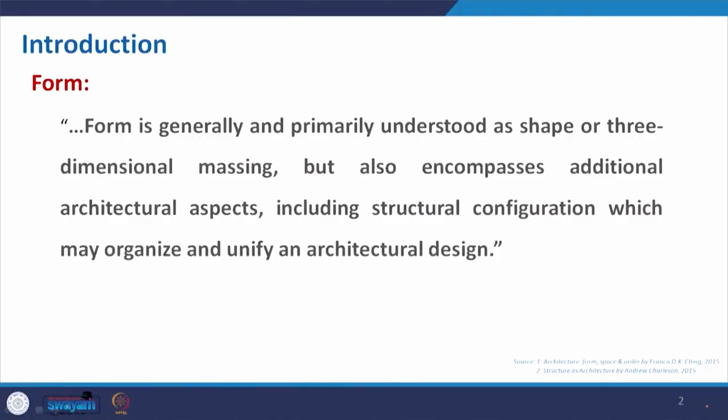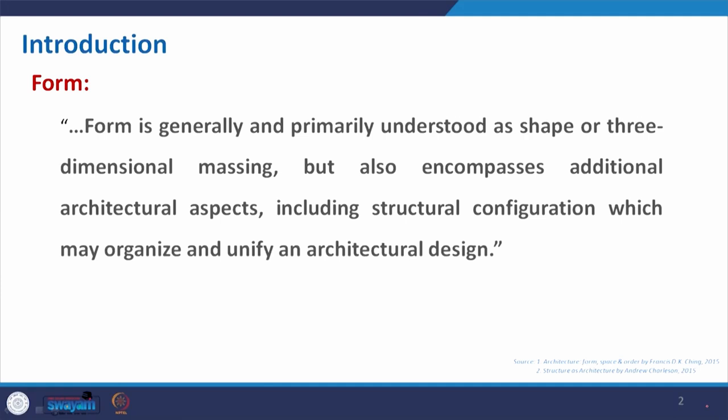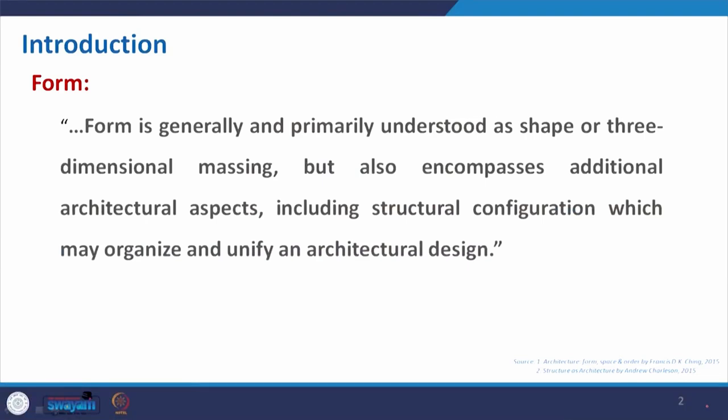Here, as in previous lectures, we look at the definition. Form is generally and primarily understood as shape or three-dimensional massing. One object having three dimensions gives a sensation to our eyes and we see that object as a form, but it also encompasses additional architectural aspects such as space creation and different arrangements including structural configuration.